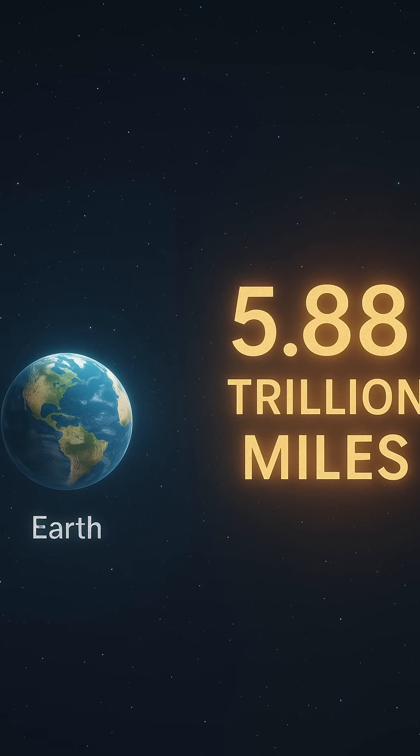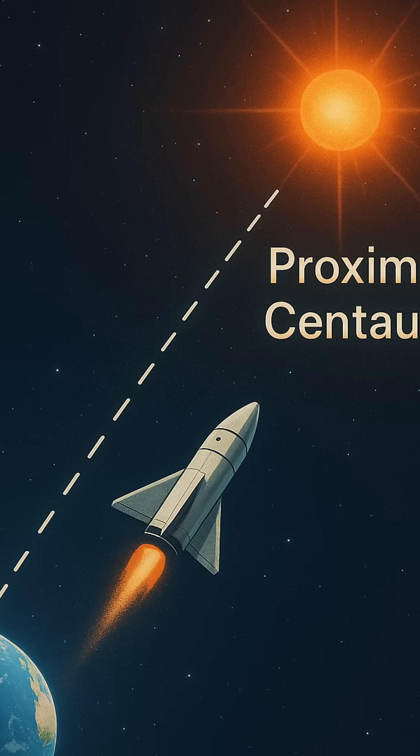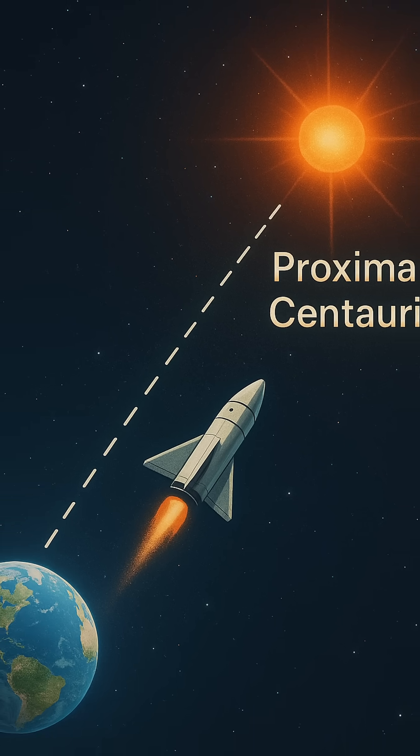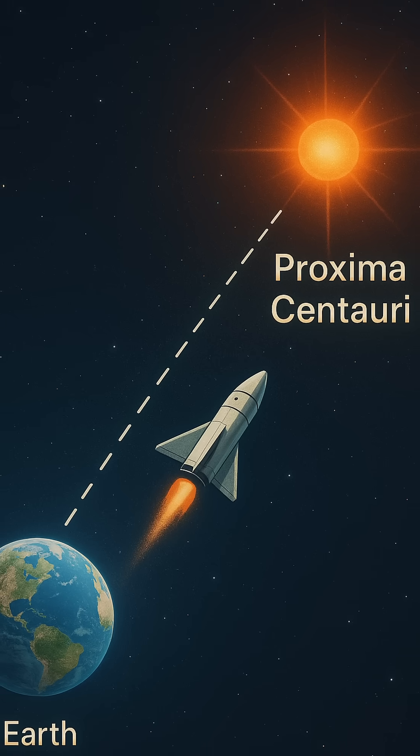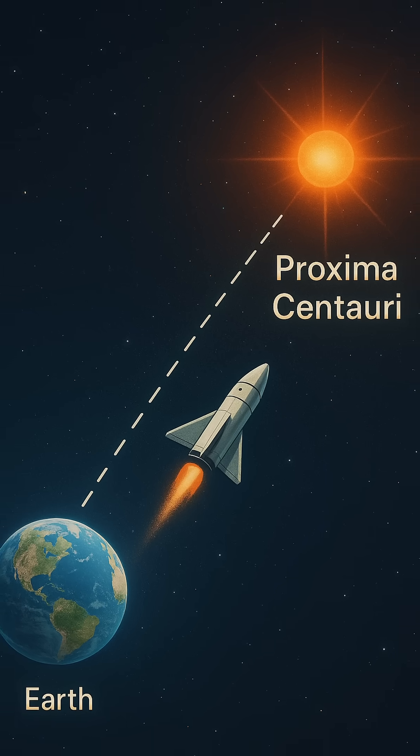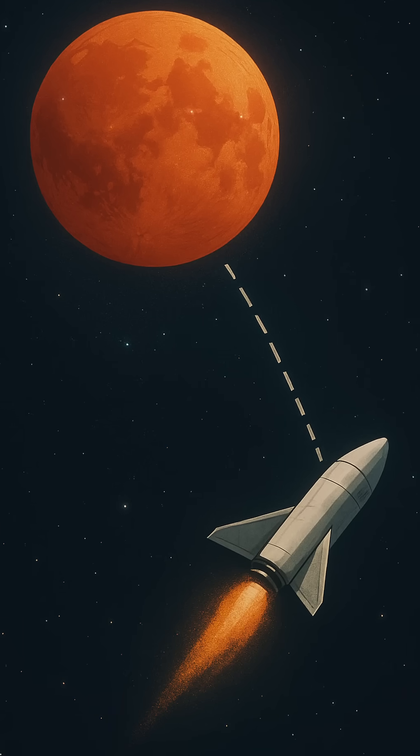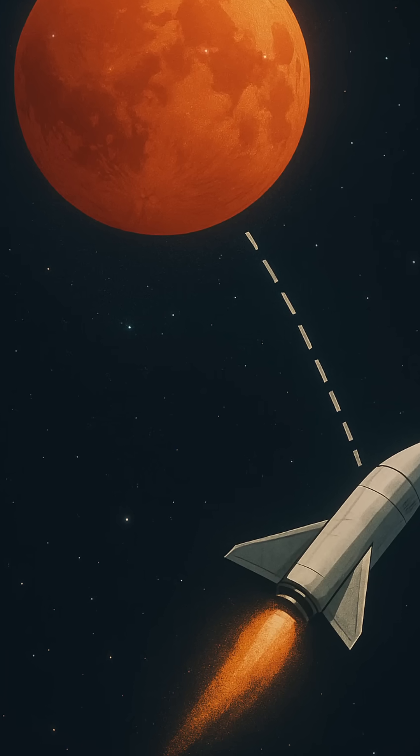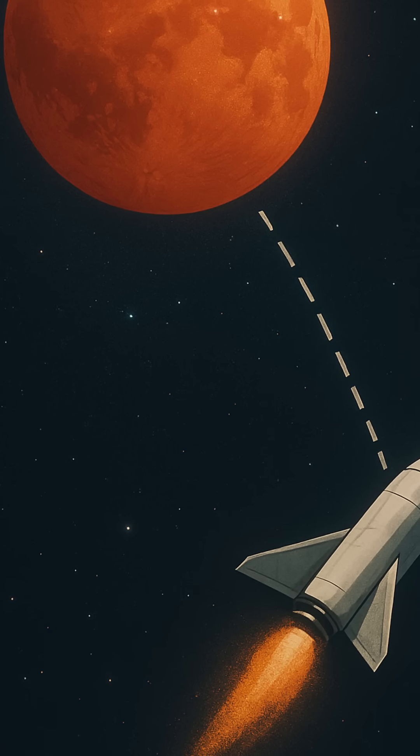That's not just far, it's beyond comprehension when compared to anything we experience here on Earth. To put it into perspective, the fastest spacecraft ever built, NASA's Parker Solar Probe, travels at speeds up to 430,000 miles per hour. At that speed, it would still take over 17,000 years to travel just one light year.